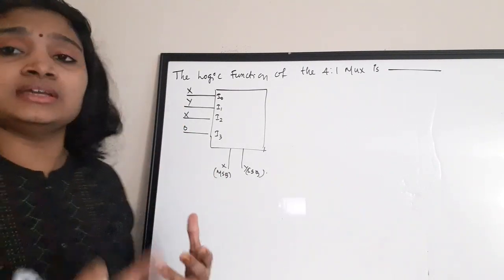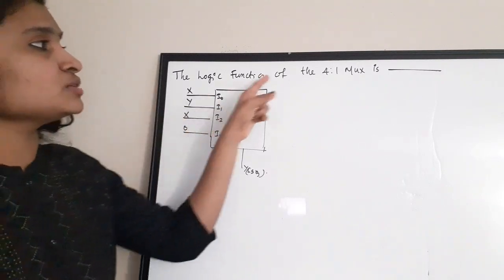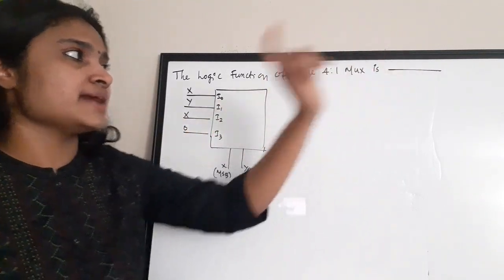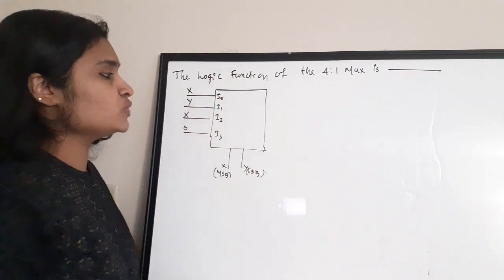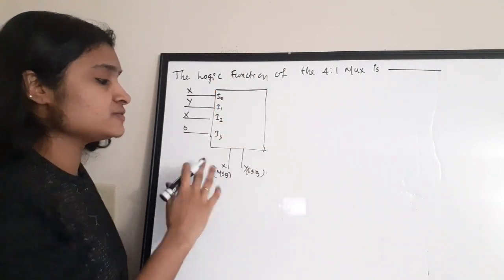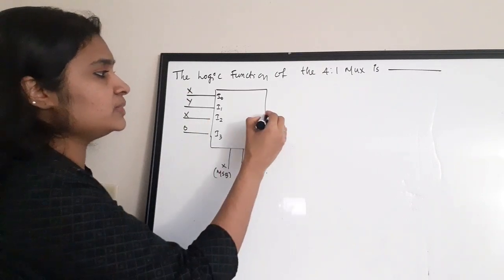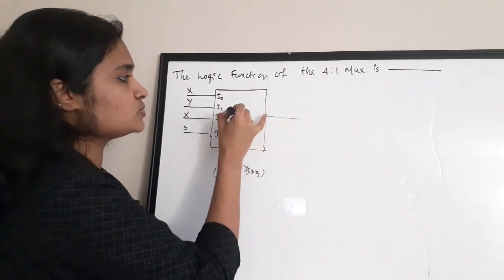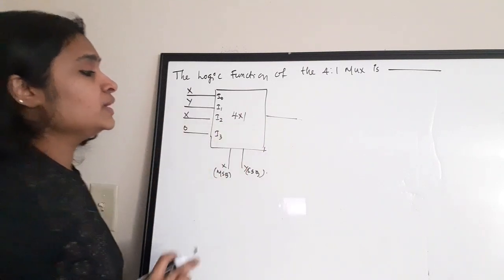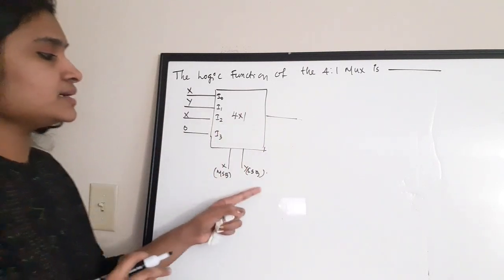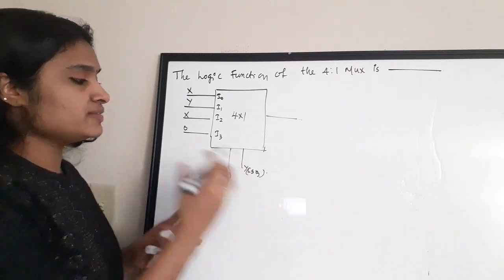The first question asks: what is the logic function of this 4-to-1 MUX? You need to write the logical expression for it. To identify it as a 4-to-1 MUX, there are 4 inputs and one output. The select lines are MSB (X) and LSB (Y).